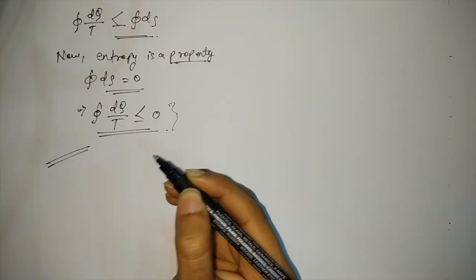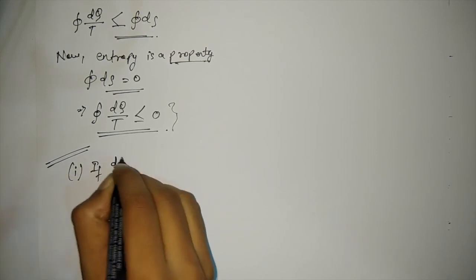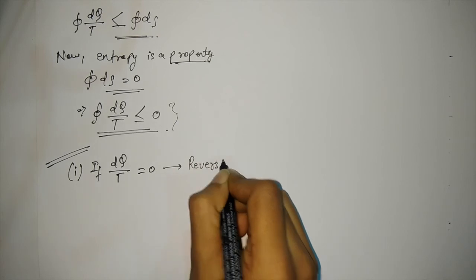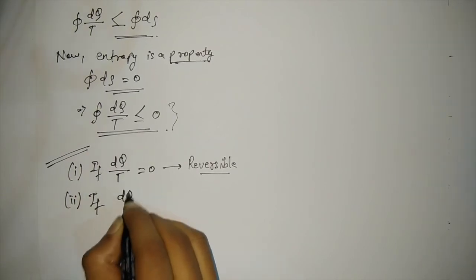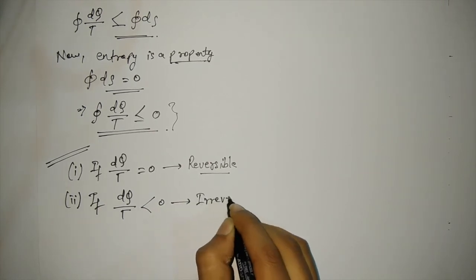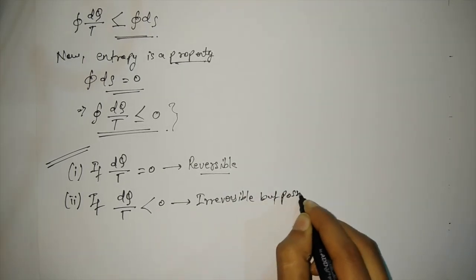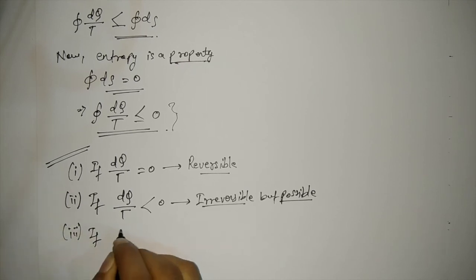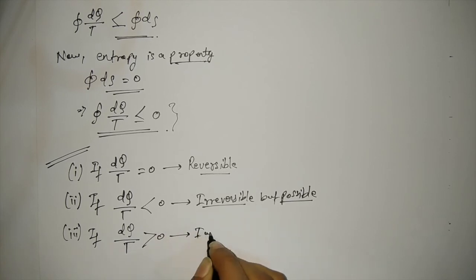The most important conclusion from the examination point of view: Number one, if the cyclic integral of dq/t equals 0, then the process is reversible. Number two, if dq/t is less than 0, then the process is irreversible. And number three, if dq/t is greater than 0, then the process is impossible.